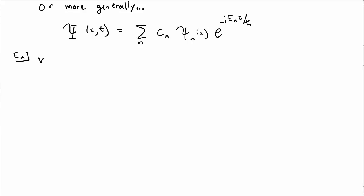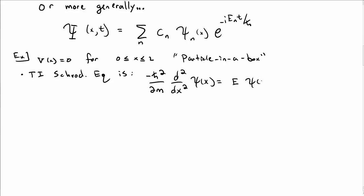Let's look at an example to make this more concrete. Let's say the potential is zero inside the region 0 and L. This is what you would normally call a particle in a box, and let's say it's infinite outside of that, so it's bounded inside of 0 and L. The time-independent Schrödinger equation then becomes minus ℏ² over 2m second derivative with respect to x of ψ equals E ψ, since V equals zero.